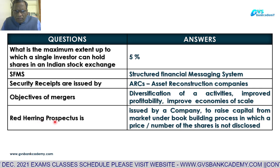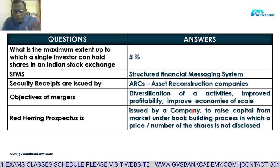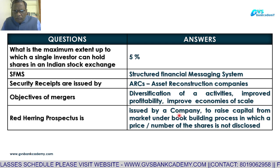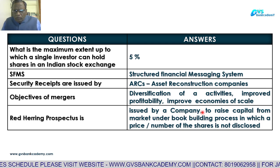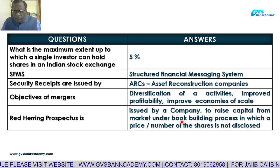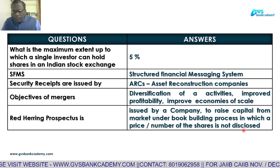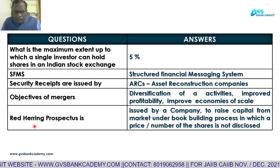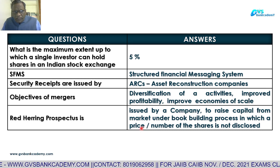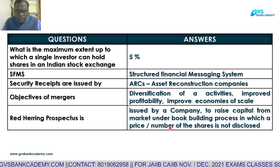Red Herring Prospectus is a prospectus issued by a company under the book-building process to raise capital from the market by issuing shares to the public. Under the book-building electronic process, when a company issues a Red Herring Prospectus, it cannot disclose either the issuing price or the number of shares being issued in that prospectus.